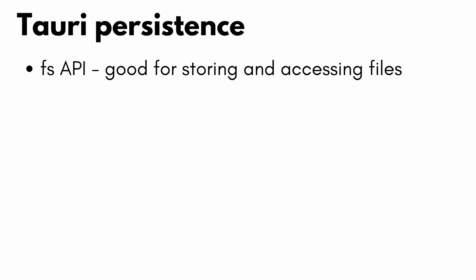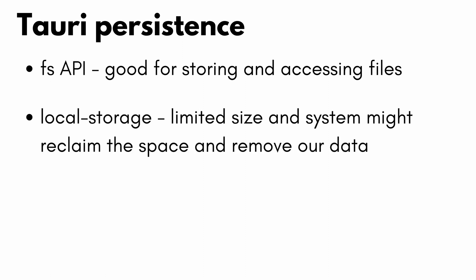However, the file system API seems to be a bit more suited towards accessing and storing files rather than data or settings. We technically could use things like local storage straight from the frontend, but there are a few issues. The first is minor — local storage has a limited size, but we're not trying to store a lot, just a bunch of settings. The second one is tougher: local storage does not guarantee that our data will not be removed if the system gets hungry for disk space, and that is bad.